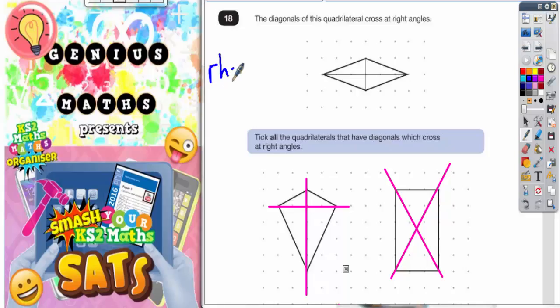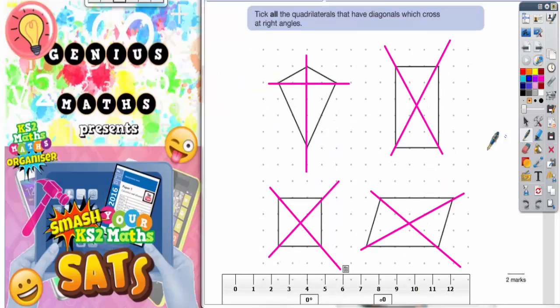This one here is a rhombus, and that's got all four sides the same, a bit like a square. This one here is a kite. This here is a rectangle. Down here we've got a square, and here we've got a parallelogram.